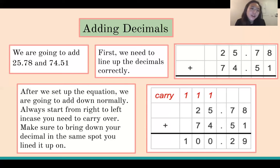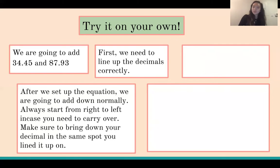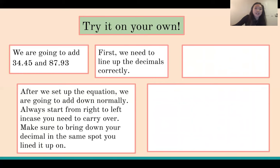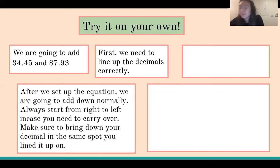On the next slide, I have the steps written out for you in case you've forgotten. For your 'try it on your own,' you are going to add 34.45 and 87.93. I'll give you a few minutes to work through that on your own, and then I'll come back and work through the answer with you.